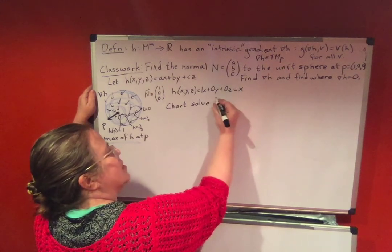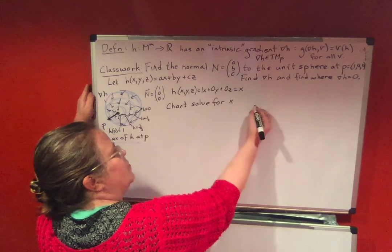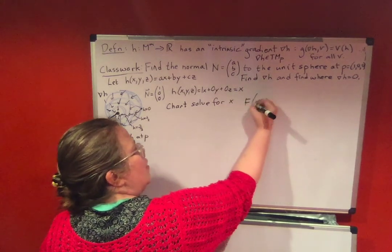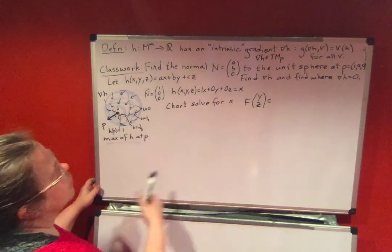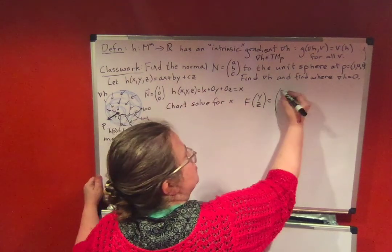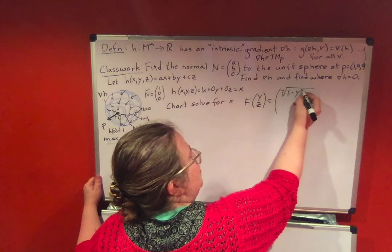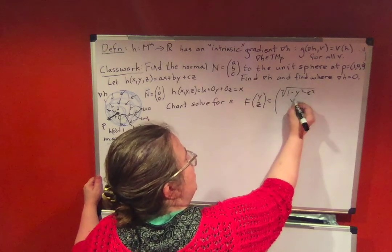So we're going to start solving for x. We get f of (y,z) equals, if I solve the formula for a sphere for x, we're going to get square root of 1 minus y squared minus z squared.